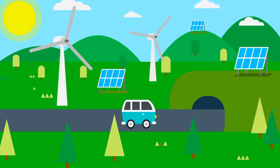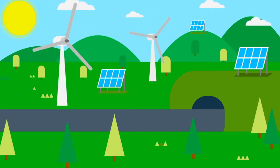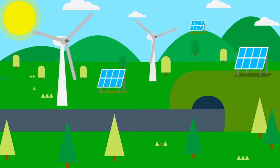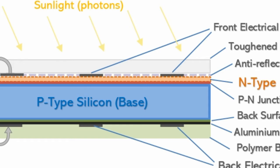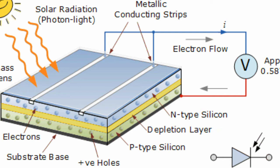When light hits the PN junction, the light photons can easily enter the junction through the very thin P-type layer. The light enters in the form of photons and supplies sufficient energy to the junction to create a number of electron-hole pairs. The incident light breaks the thermal equilibrium condition of the junction.